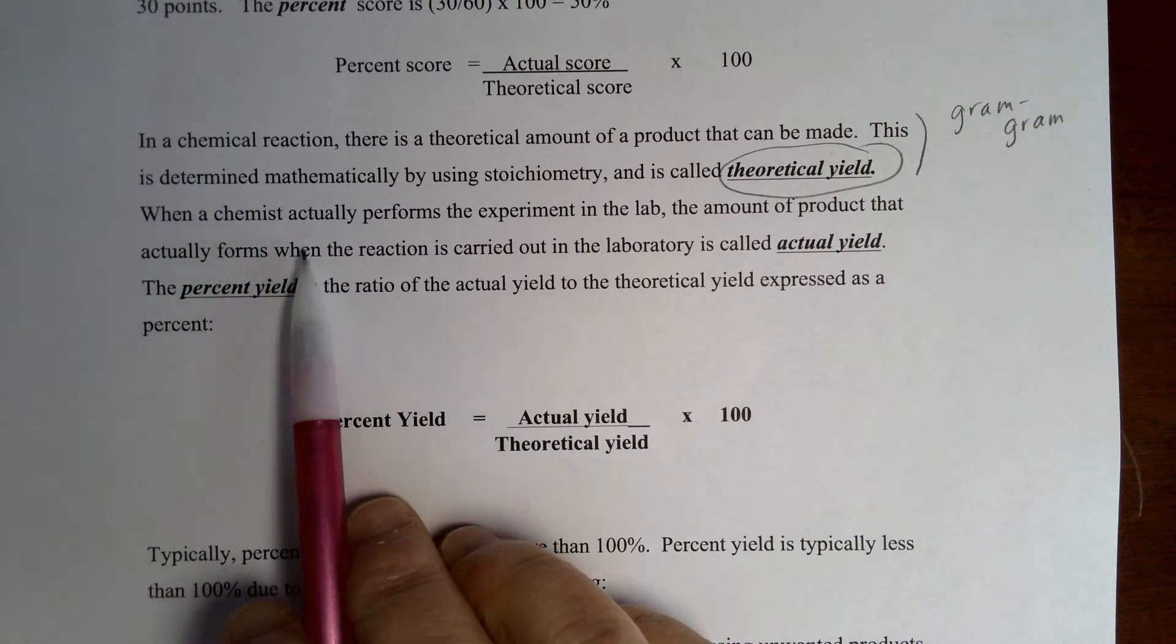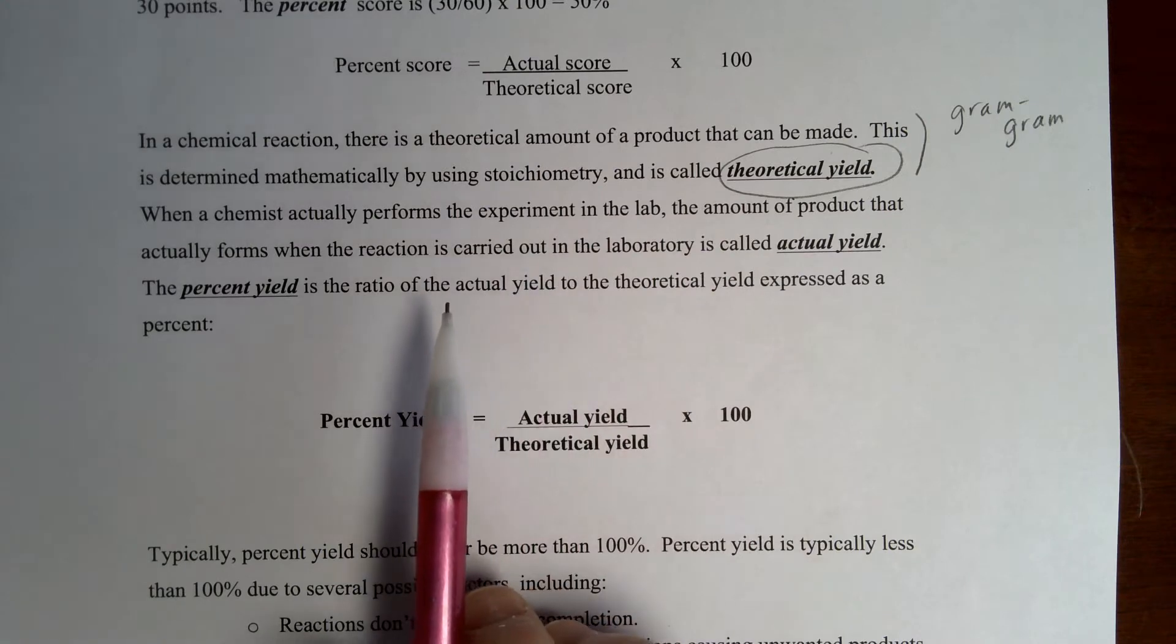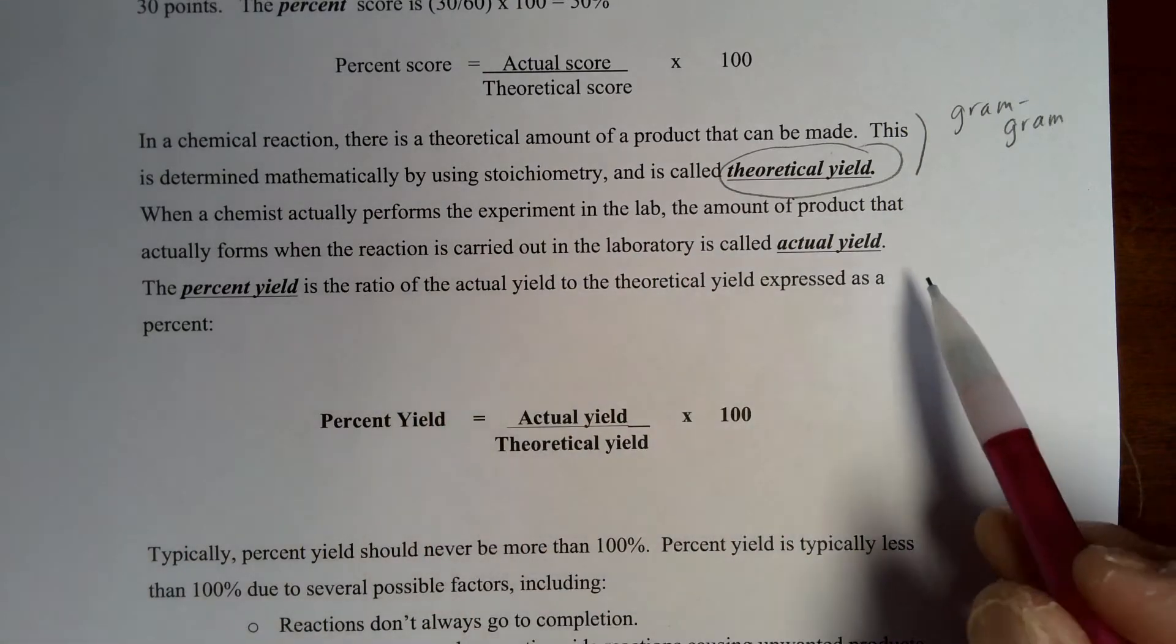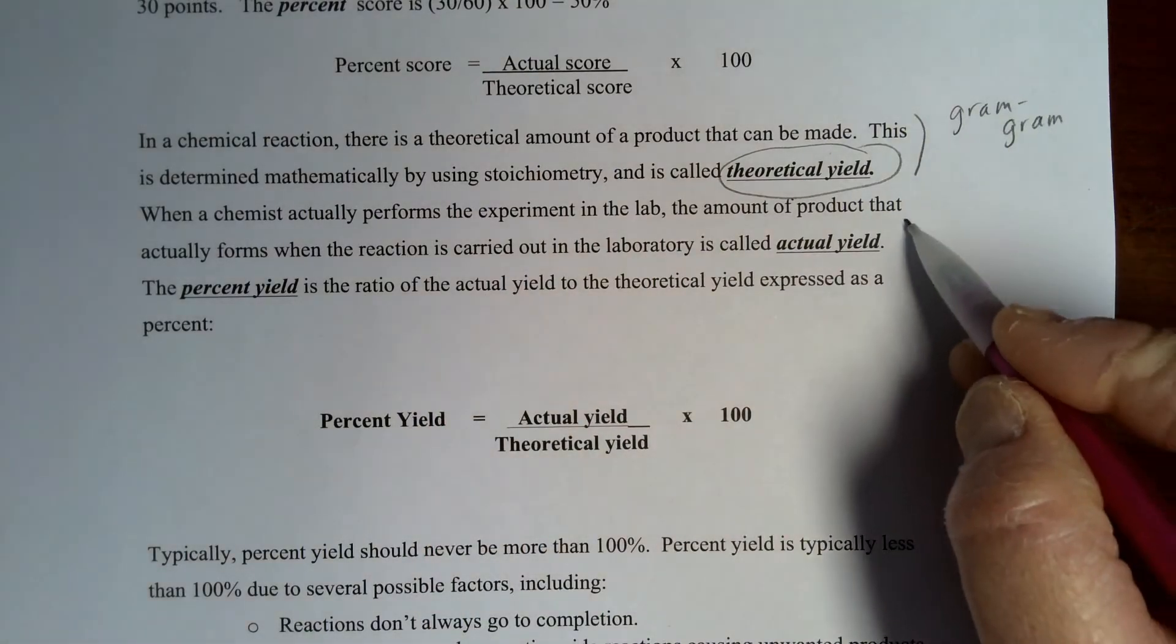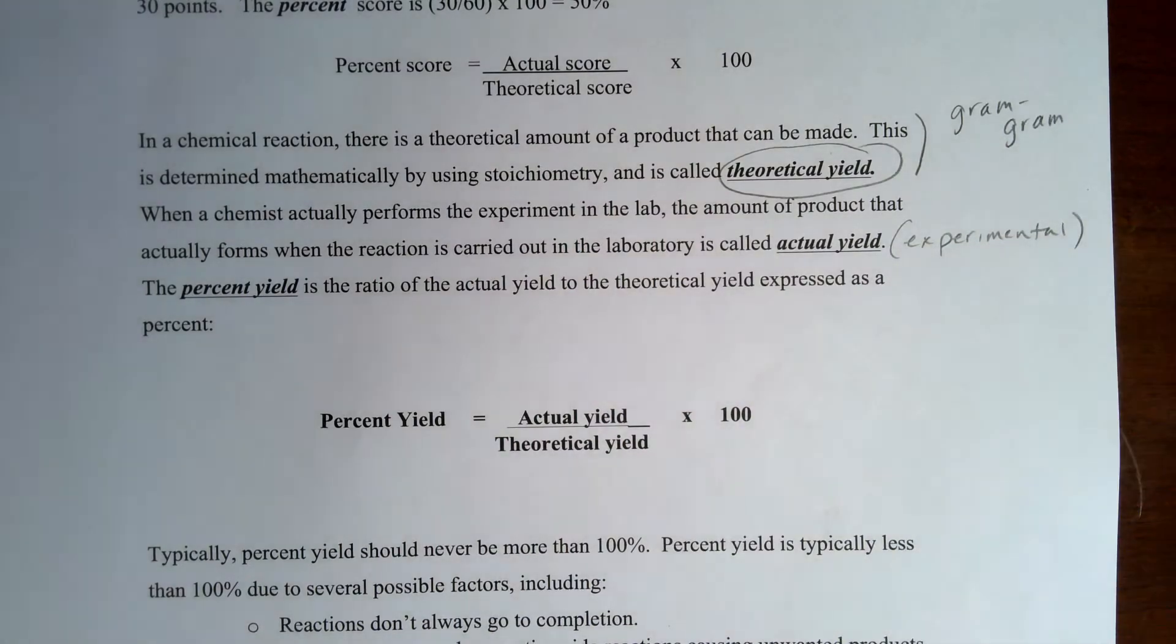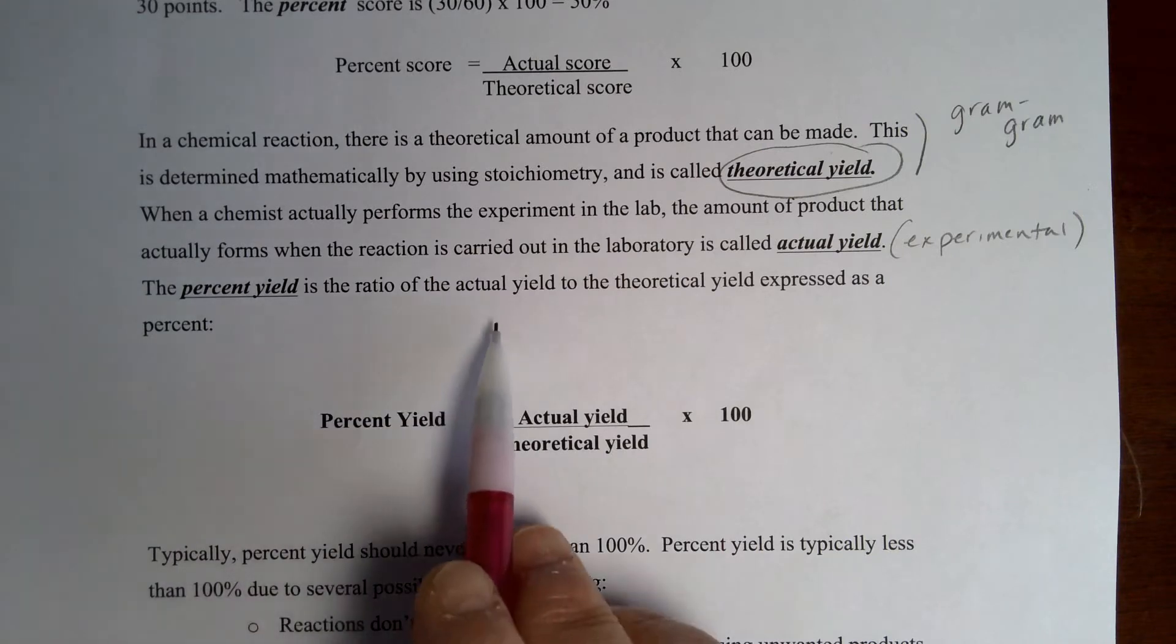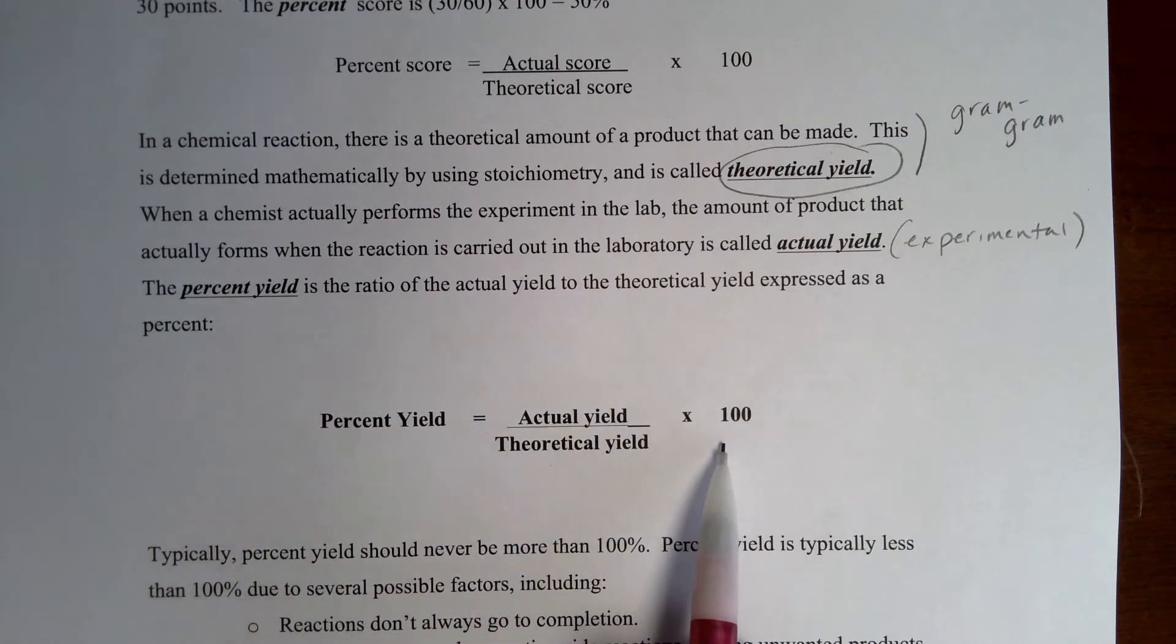Now when the chemist actually performs that experiment in the lab, the amount of product that actually forms when the reaction is carried out in the laboratory is called the actual yield, or sometimes it's called the experimental yield. It's what you actually produce when you are doing the chemistry in a chemistry lab. And so the percent yield is the ratio of the actual yield to the theoretical yield expressed as a percent.